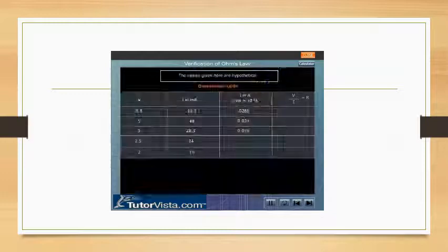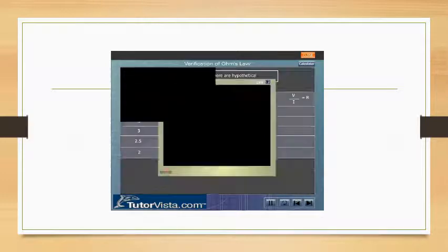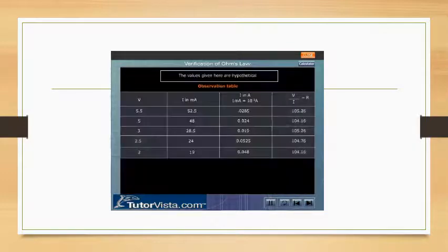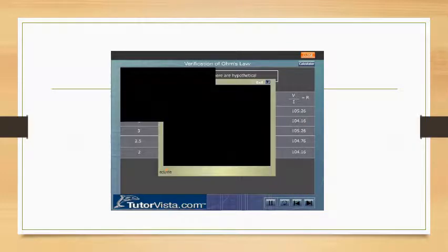Calculate V by I in each case. The value of V by I is found to be equal to a constant R, which is the resistance of the conductor, thus verifying Ohm's law.